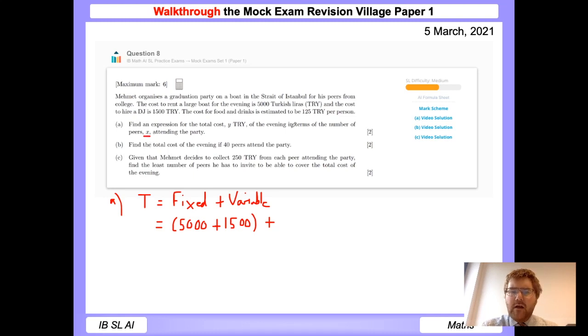So our total cost will be equal to the fixed costs, the ones that do not change depending on number of people, plus the variable costs. A little bit of economics in this question about fixed costs and variable costs. So we need to work out how many fixed costs we have here. We need to rent the large boat, so that's 5,000, and we need to hire the DJ. So 5,000 plus 1,500, and then plus, well this is going to depend on the number of people attending the party, the x. So it's 125 per person, so we need to then work out 125x.